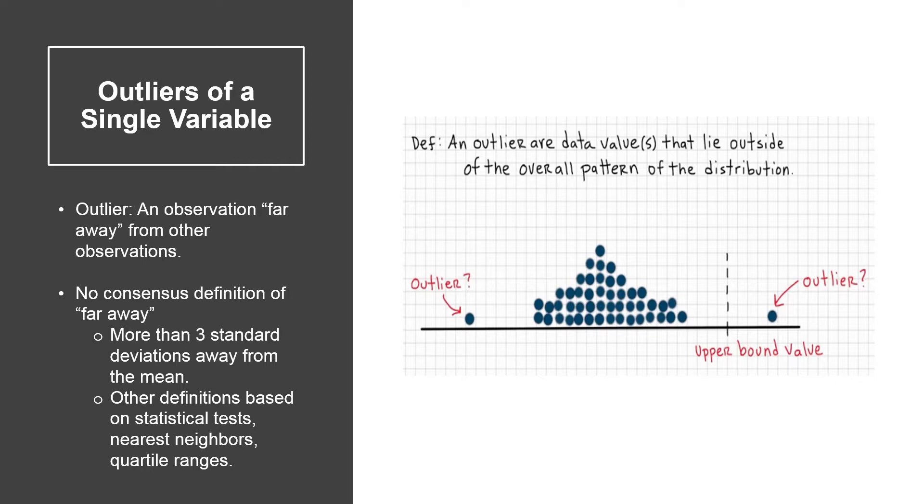Perhaps the most commonly adopted definition is based on the distance between each data point and the mean. Usually, any observations above or below three standard deviations of the mean are considered outliers. But there are also other definitions based on statistical tasks, nearest neighbors, and quartile ranges.